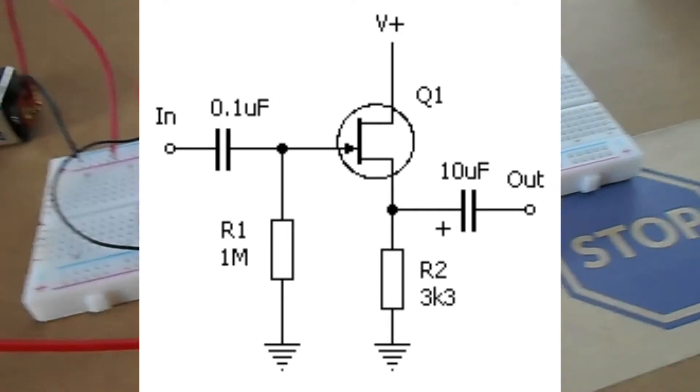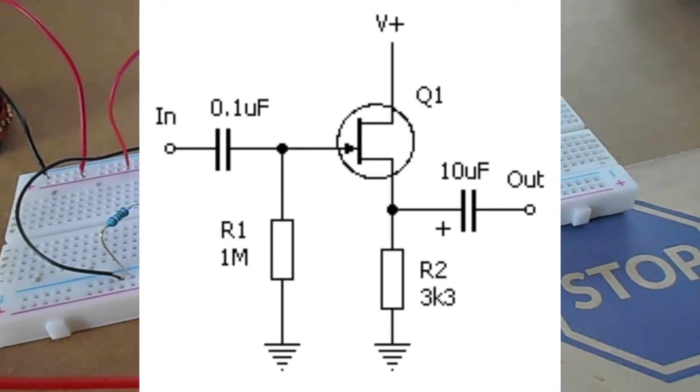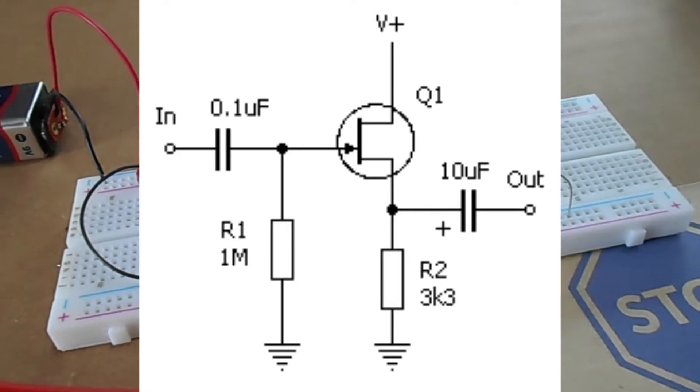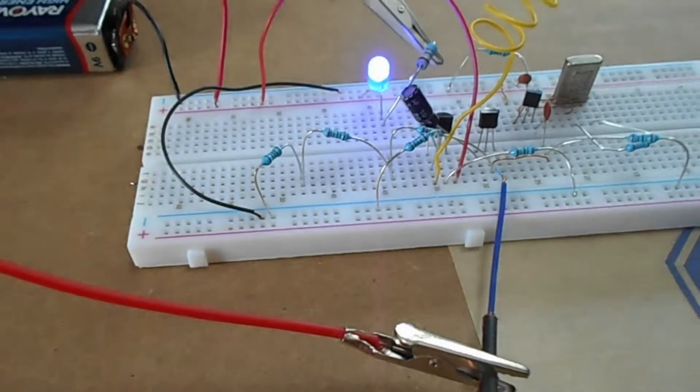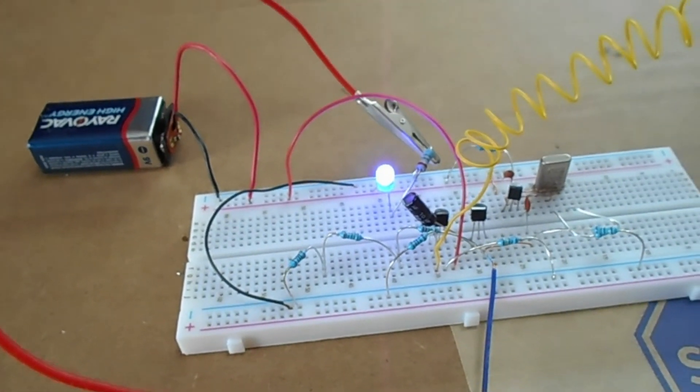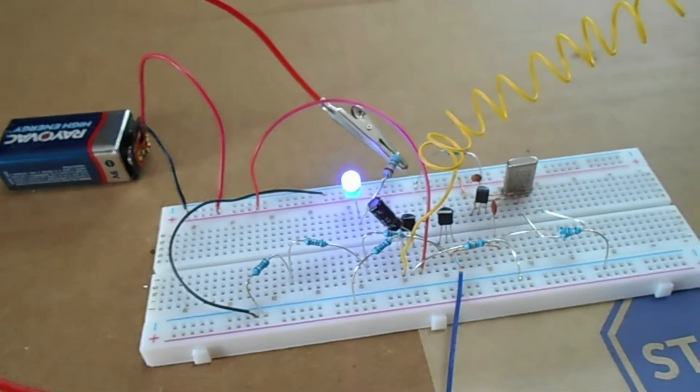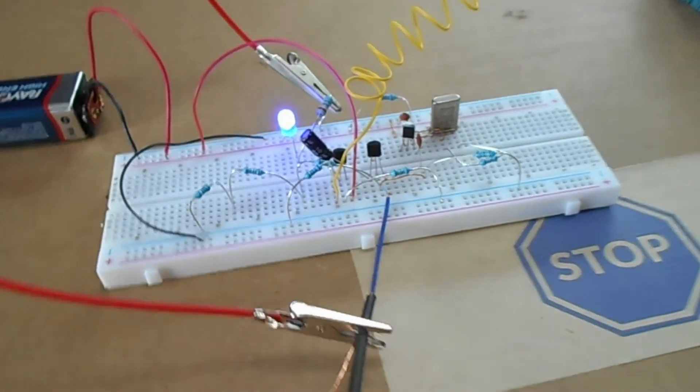That connection there I tied to ground using a 1 megaohm resistor. Then the output of the mixer going into the amplifier is also tied to ground using 3.3K. You can see I've got three resistors here, and that's because I don't have an exact 3.3K resistor, so I just added up a couple together.